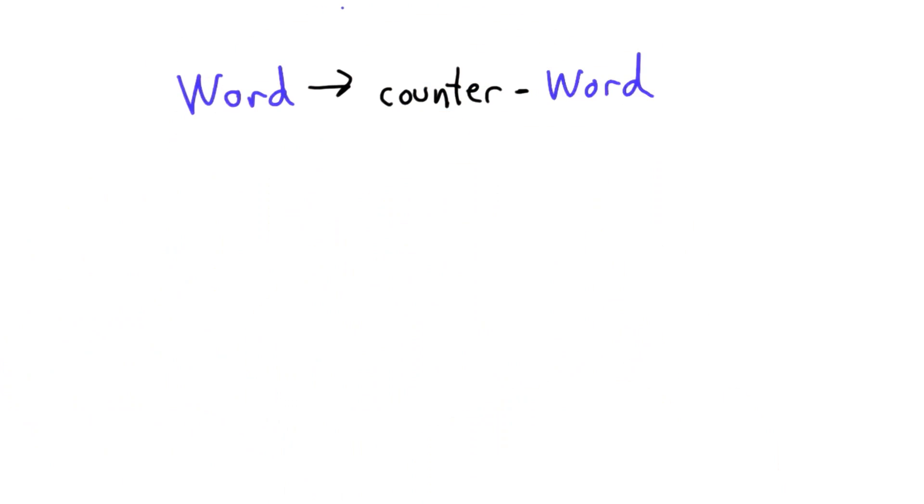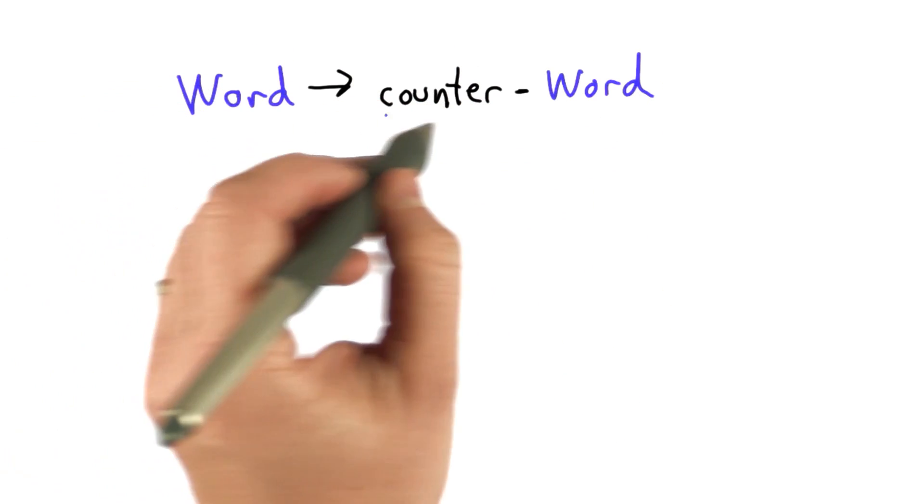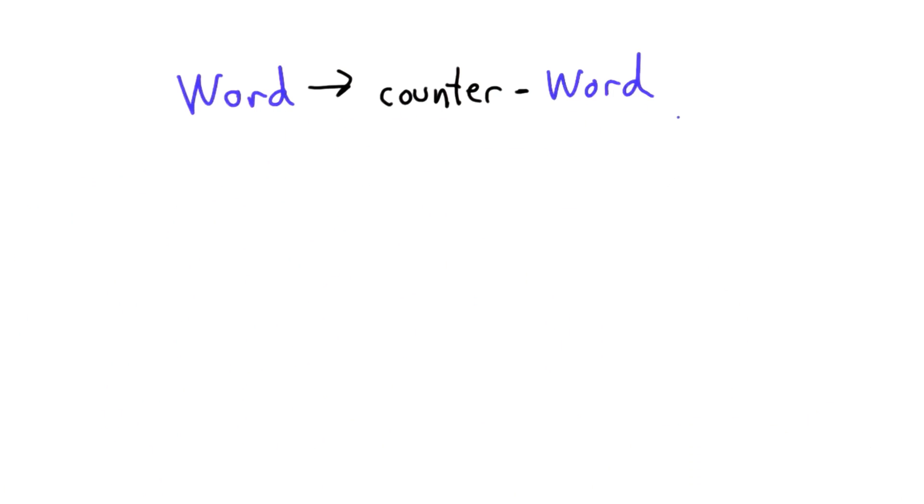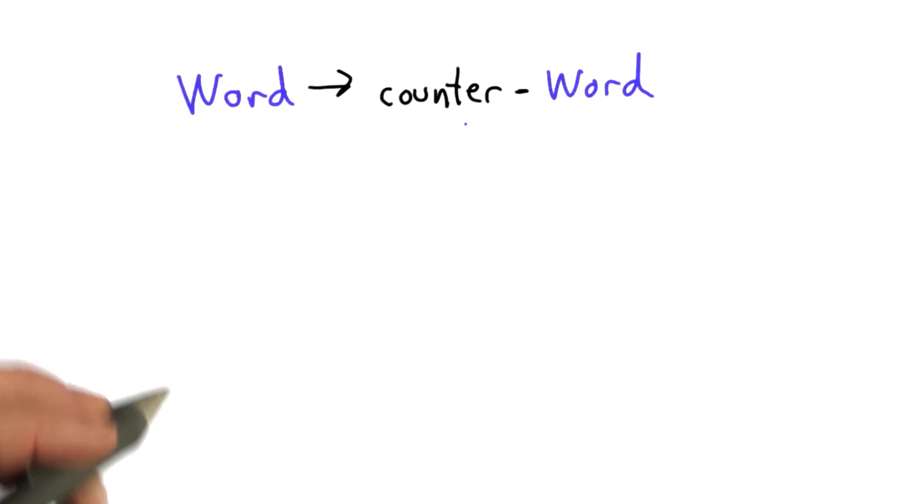I'm using the same notation that we used back in unit one. This is a BNF replacement grammar. If you need a refresher on this, please go back to the video that introduced that in unit one. But the basic property is that we can replace what's on the left side with what's on the right side. So anytime we have a word, we can replace it with counter-word. And the meaning of the new word is something that goes against the original word.